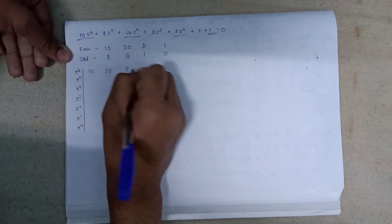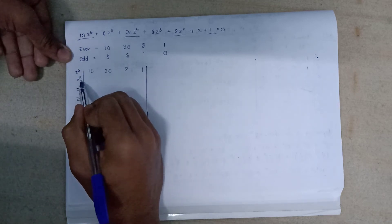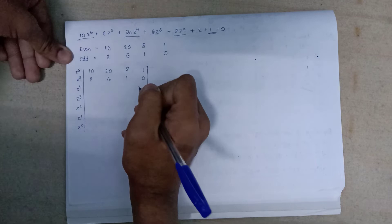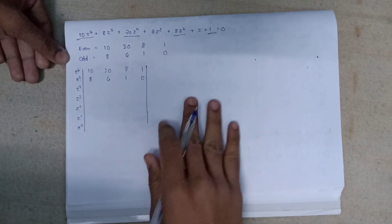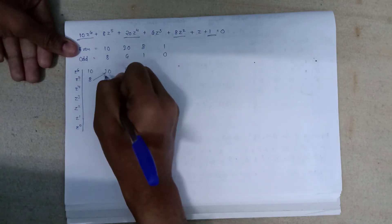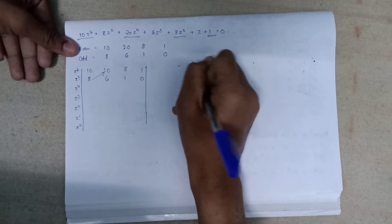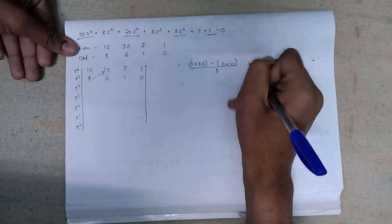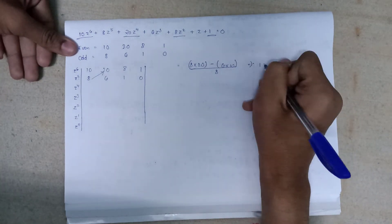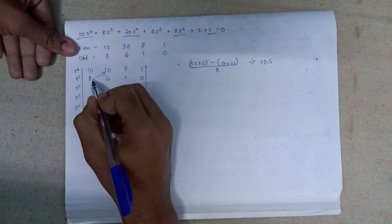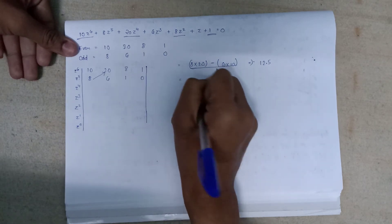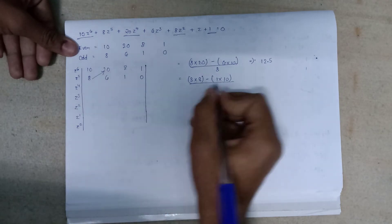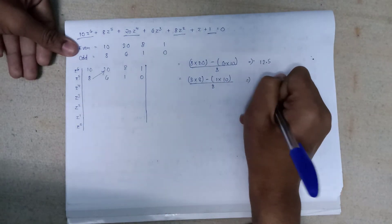For the z⁶ row we write even coefficients: 10, 20, 8, 1. For the z⁵ row (odd power) we write odd coefficients: 8, 6, 1, 0. Then: 8 × 20 minus 6 × 10, divided by 8 gives 12.5. Next: 8 × 8 minus 1 × 10, divided by 8 gives 6.75.